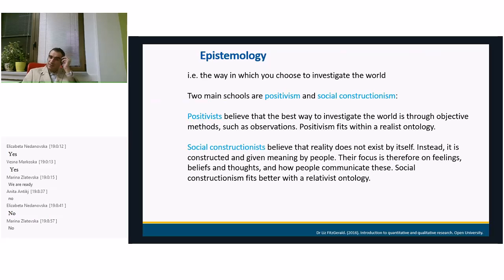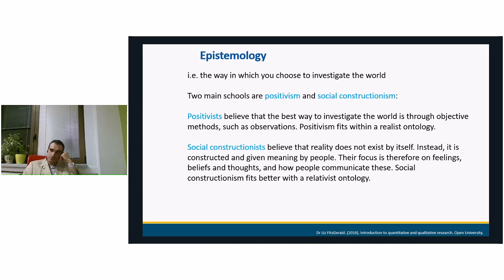Positivists believe that the best way to investigate is through objective methods, such as observations. This fits with the realist ontology. Positivists think that there is a single truth and that we can discover it through objective methods. On the other hand, we have the social constructionists. They believe that reality does not exist by itself — it is constructed and given meaning by people. Everyone has their own reality, and the focus is on feelings, beliefs, what the world looks like in our eyes, and how people communicate and transfer their view of the world to others.